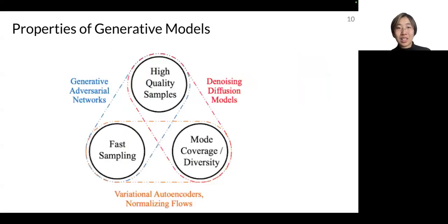So as we can see in this diagram that's referenced from other sources, we commonly know that for GANs, it has high quality generation. It also has fast sampling, however, suffers from the lack of diversity and mode coverage.